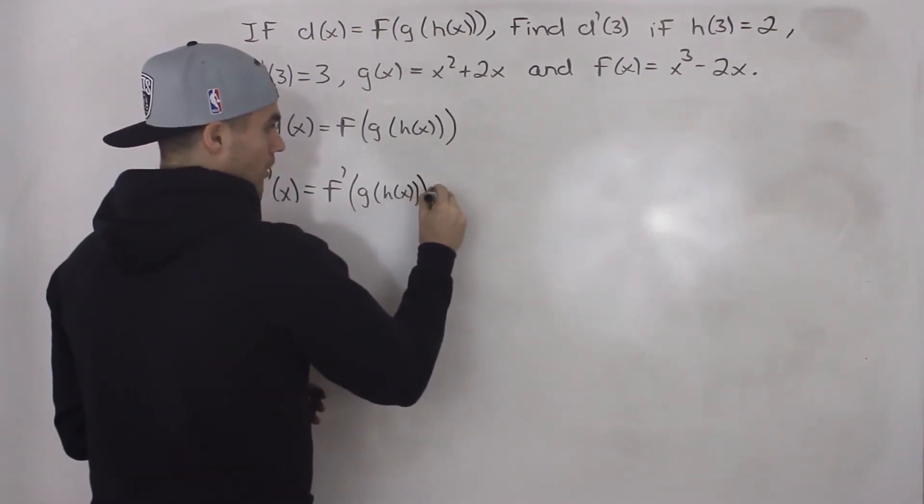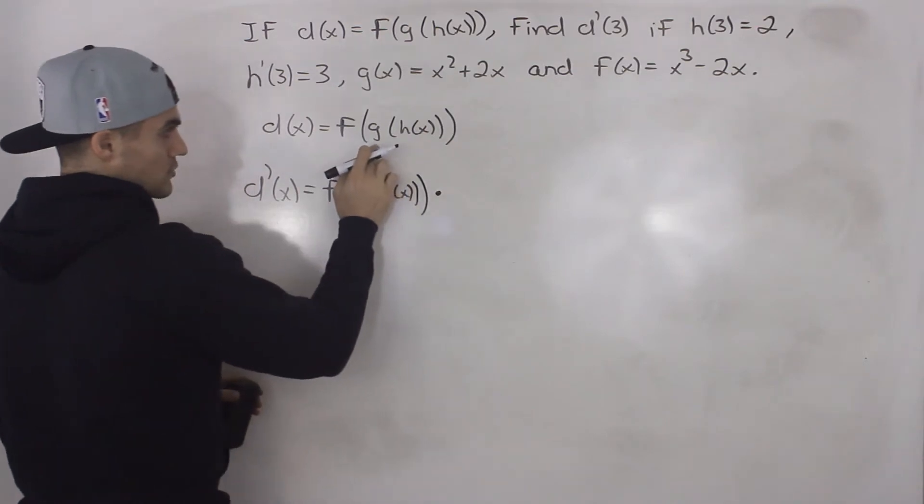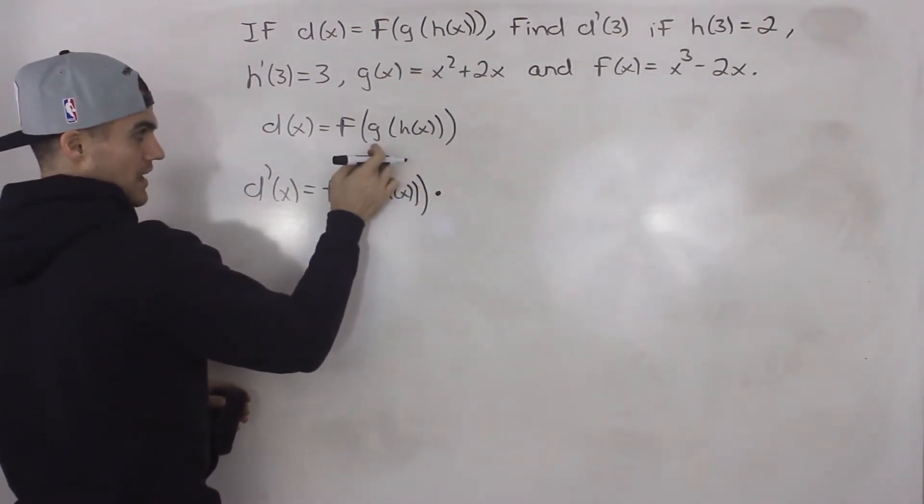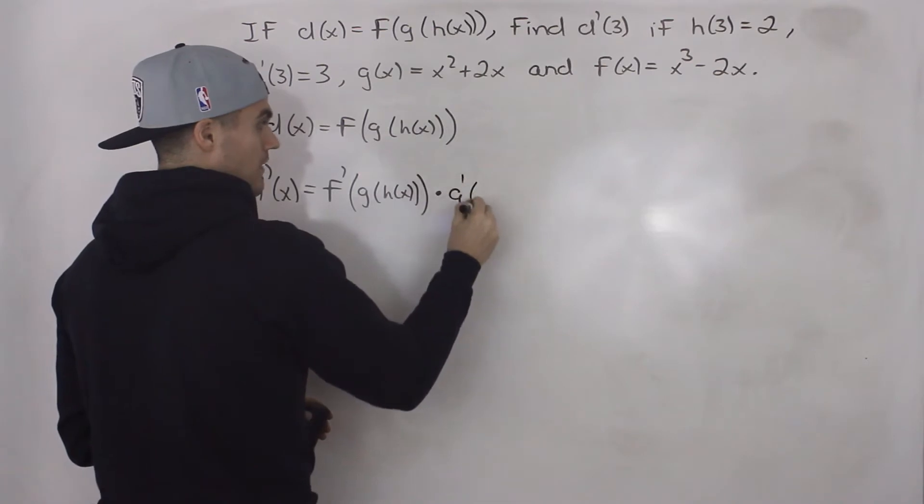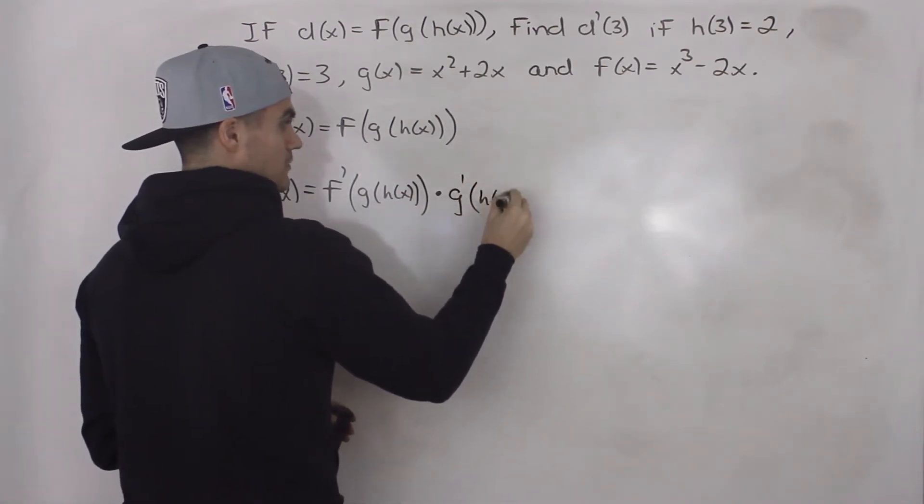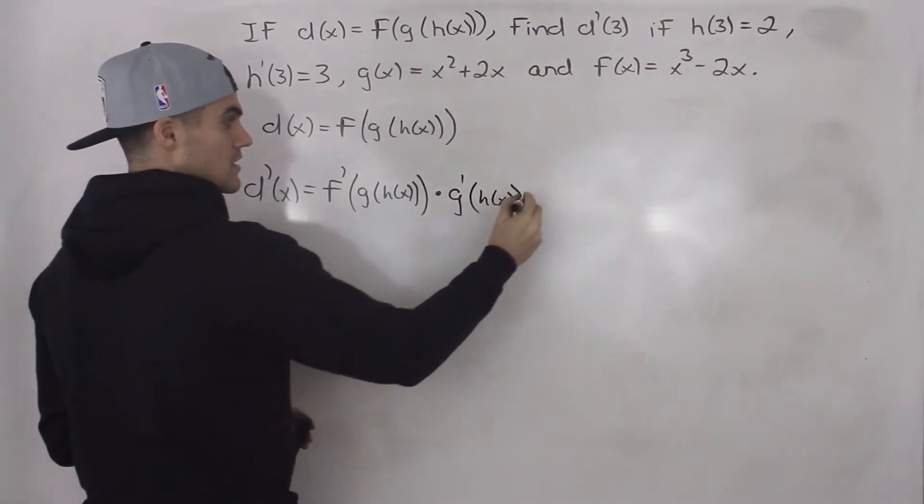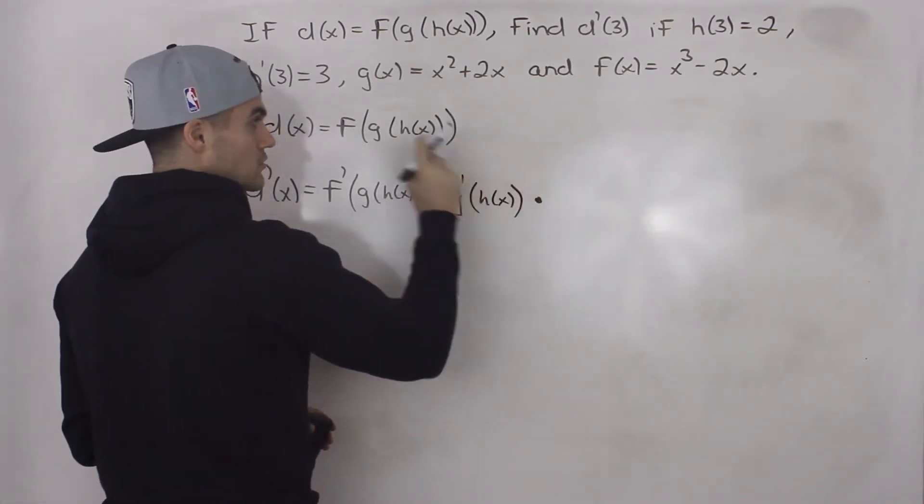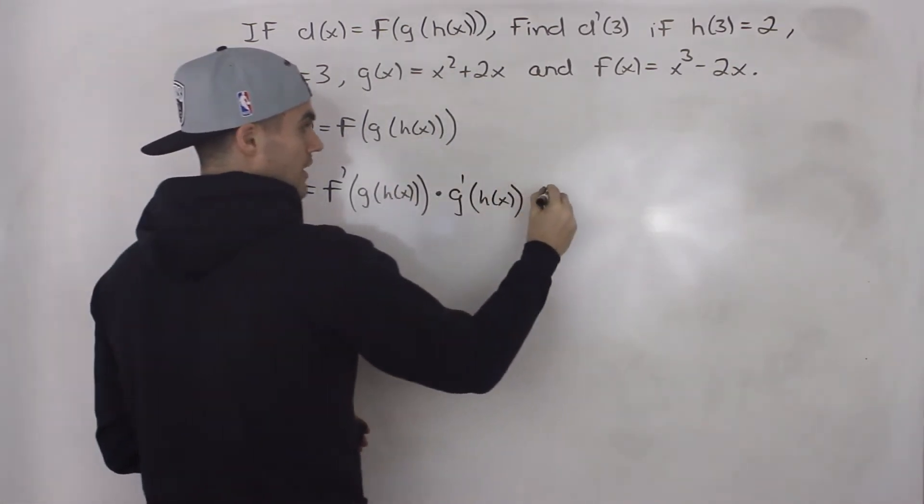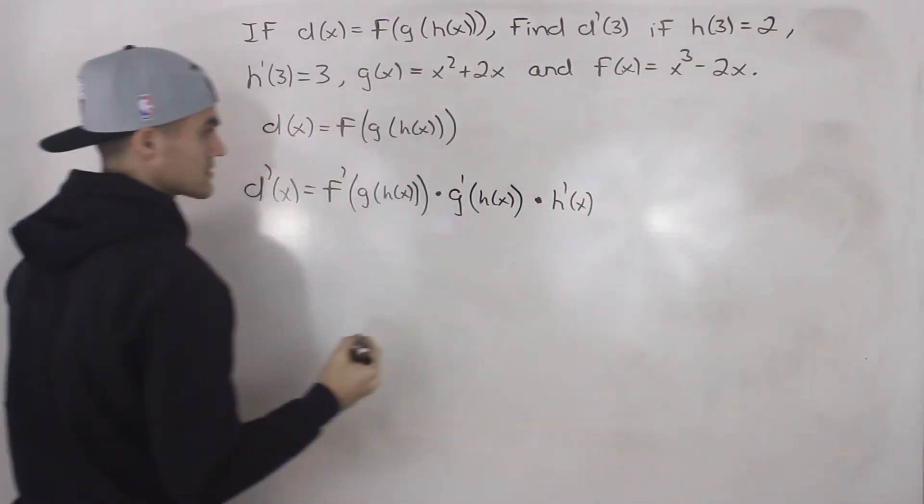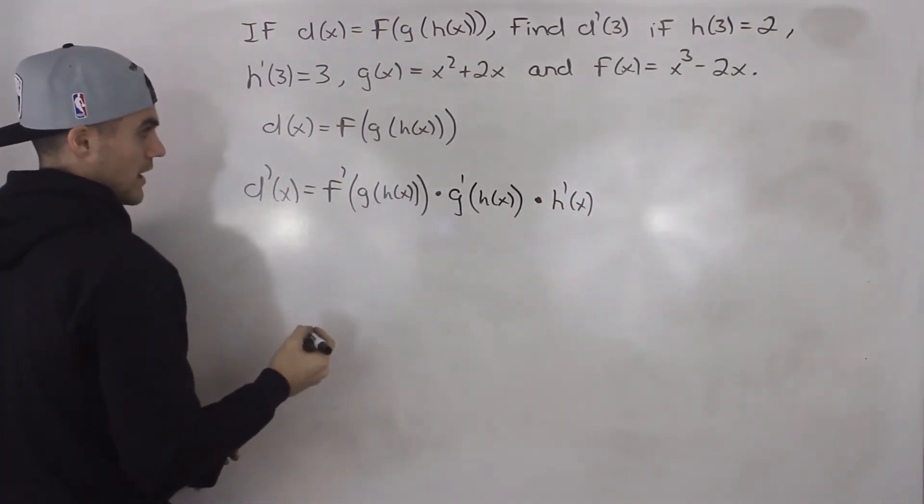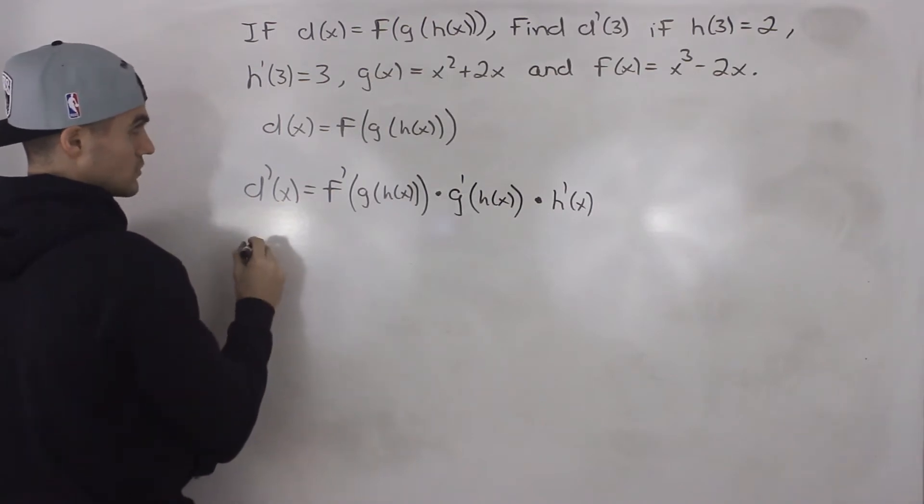Then we're going to multiply it by the derivative of the next function inside, which is g. So we're going to have g prime and then we're going to keep that bracket the same. That's going to be h of x. So g prime h of x multiplied by the derivative of that final function h of x, which would just be h prime x. Okay, so not too bad so far.